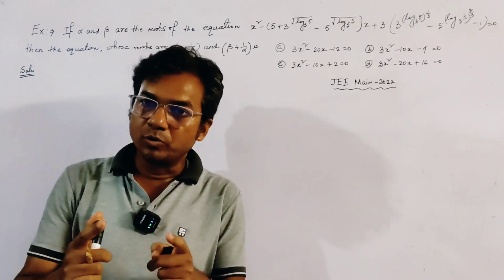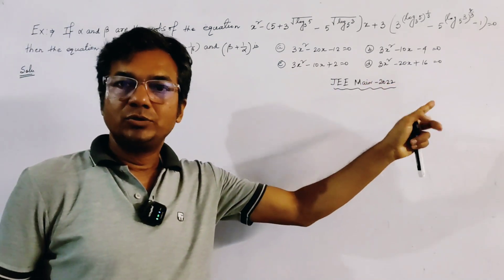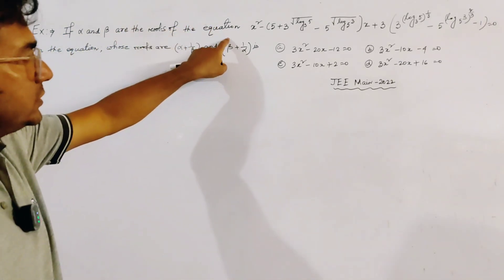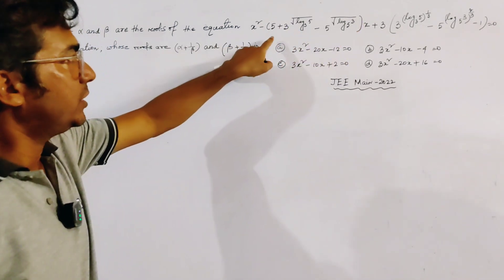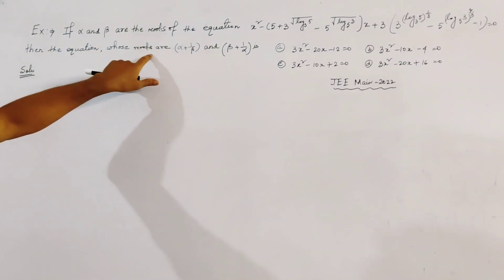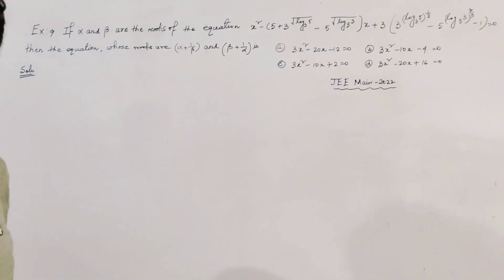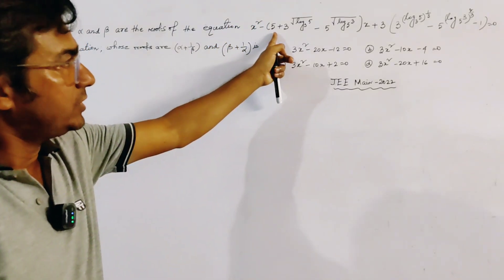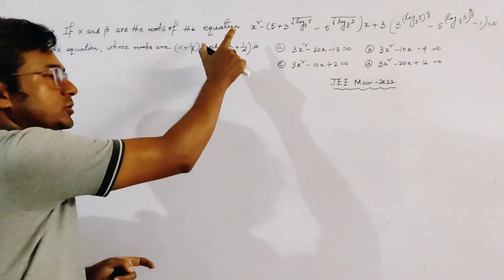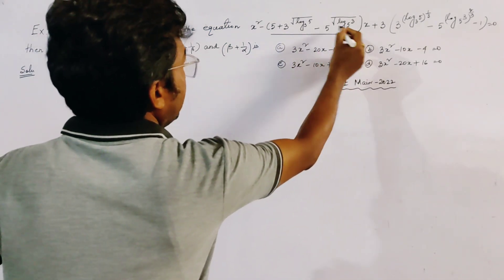A very interesting problem of quadratic equation from JEE May 2022. If alpha and beta are the roots of a given equation with many log terms, we have to find the equation whose roots are alpha plus 1 by beta and beta plus 1 by alpha. Four options are given and we have to find the correct alternative. Given one quadratic equation with roots alpha and beta, we find another quadratic equation with those transformed roots.